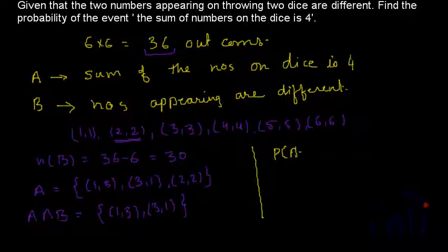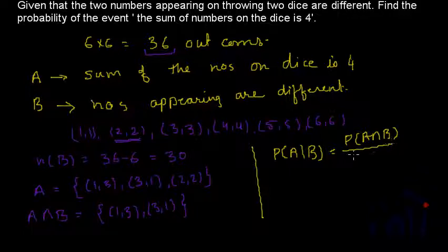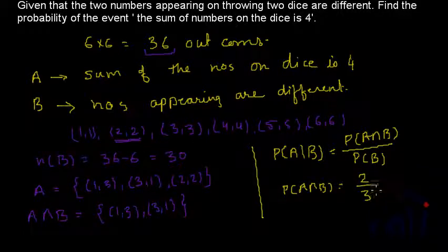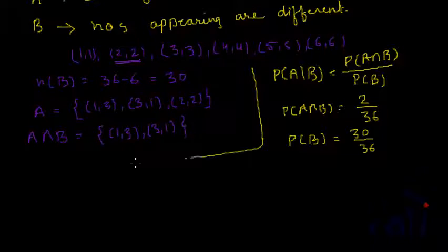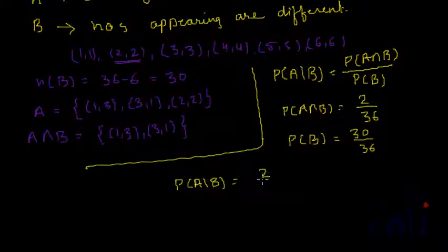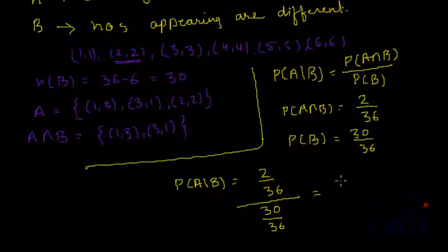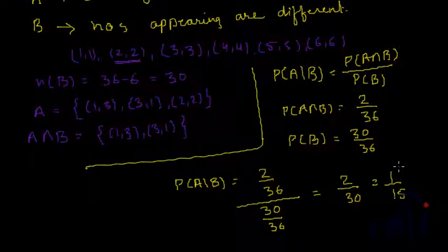The probability of event A happening where B has already occurred is equal to the probability of A intersection B divided by probability of B. The probability of A intersection B is 2 out of 36, and the probability of B is 30 out of 36. That means the probability equals 2 by 36 divided by 30 by 36, which equals 2 by 30, that is 1 by 15. So there is a 1 out of 15 chance of getting a sum of four when both dice are showing different numbers.